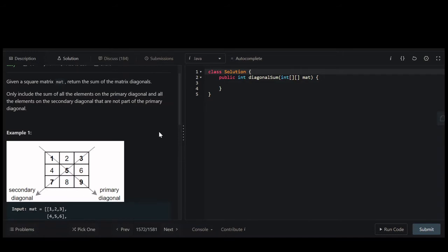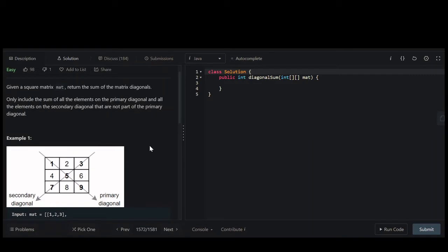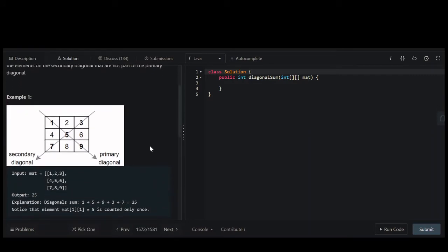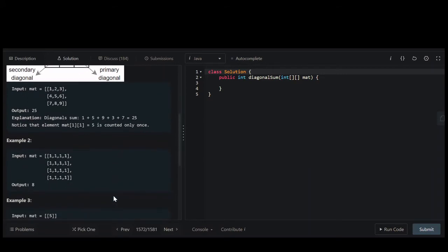However, if we duplicate any numbers, like in this case the 5 is duplicated, then we want to only count it one time. So in this example, you can see this matrix would return 25, and there's a reason why.